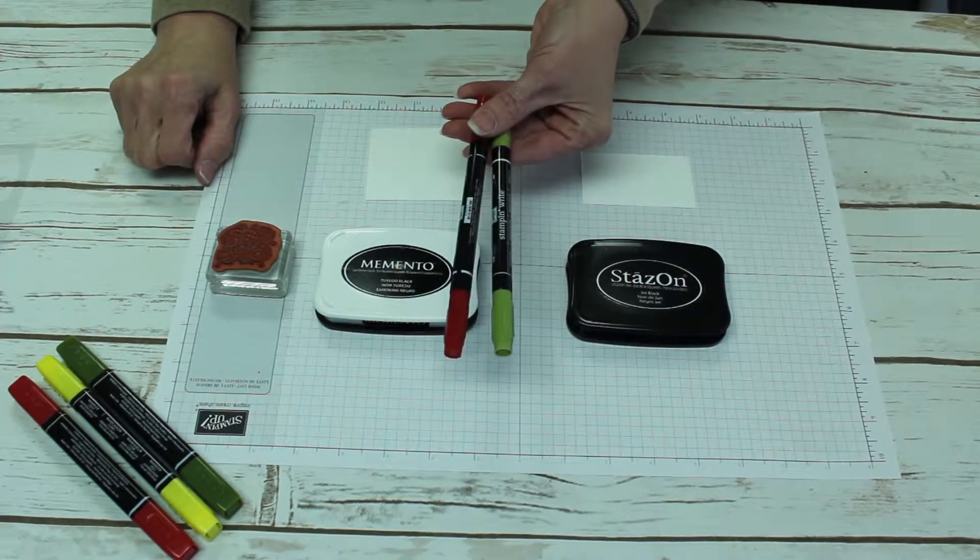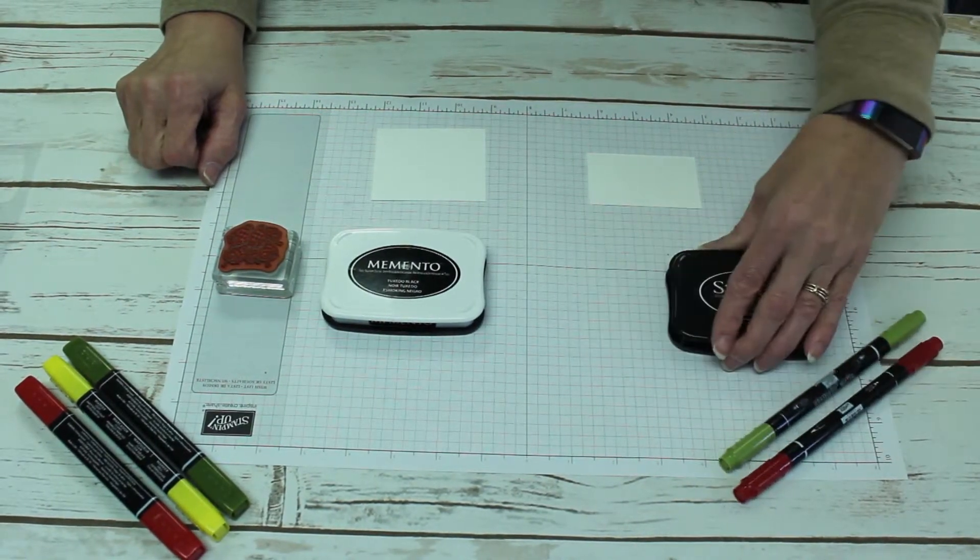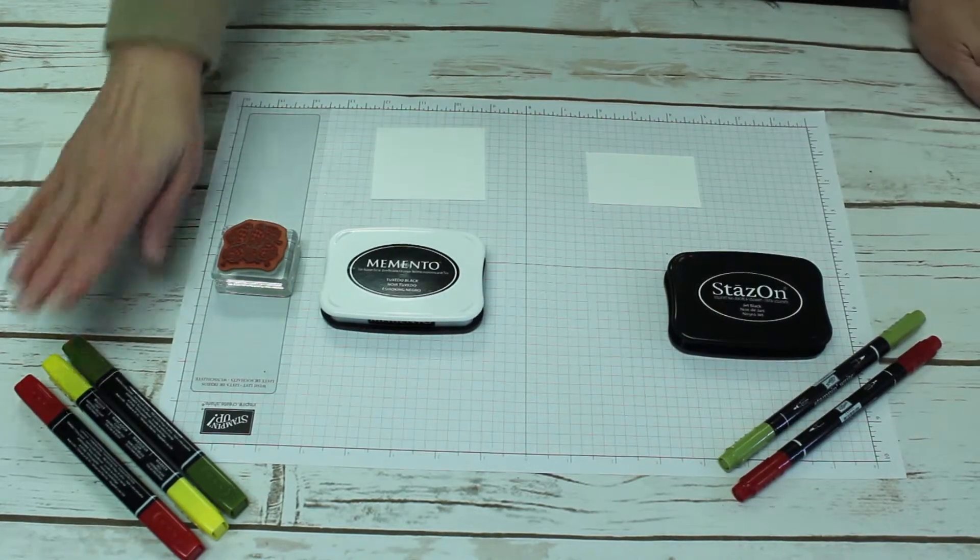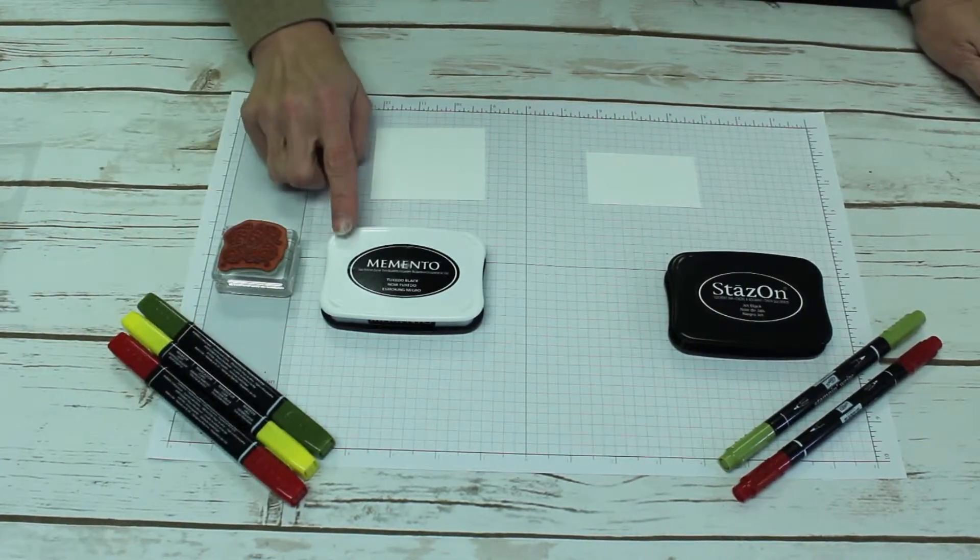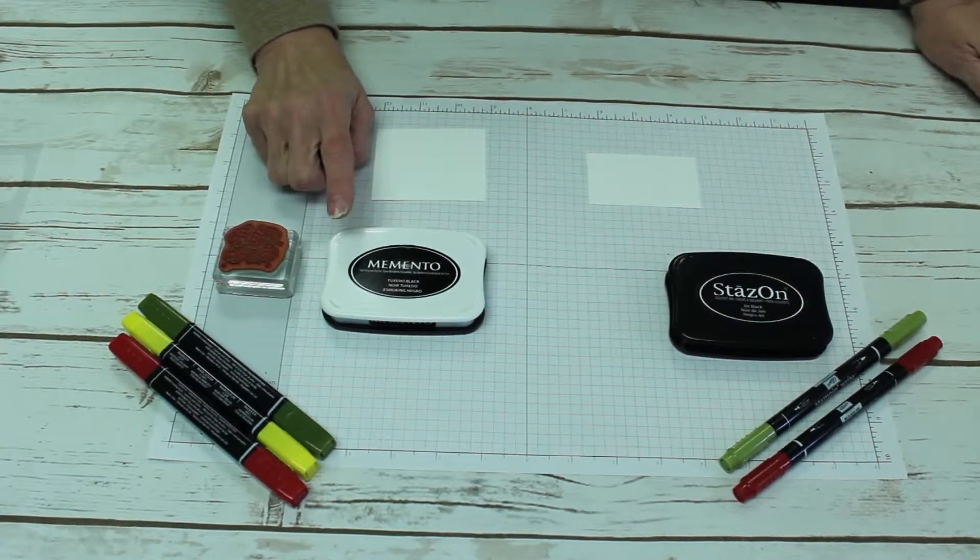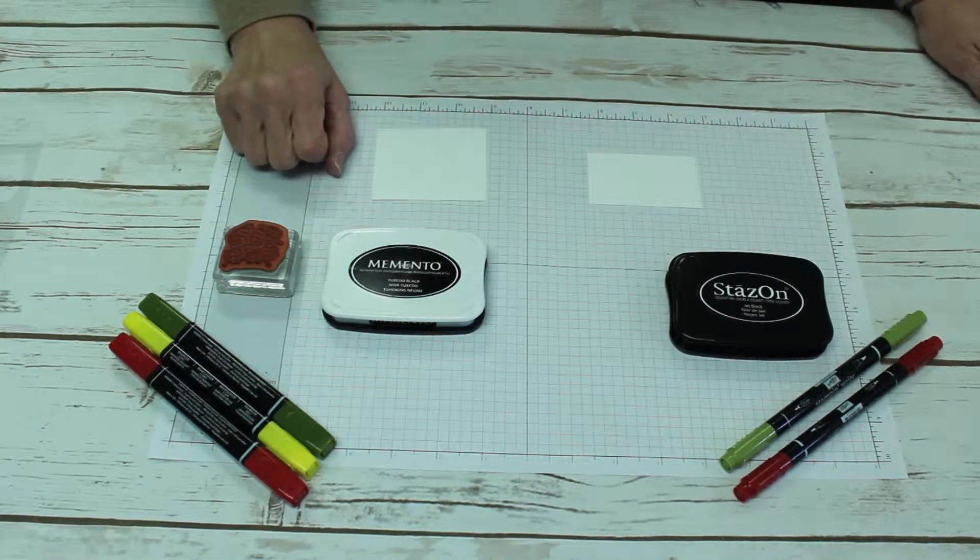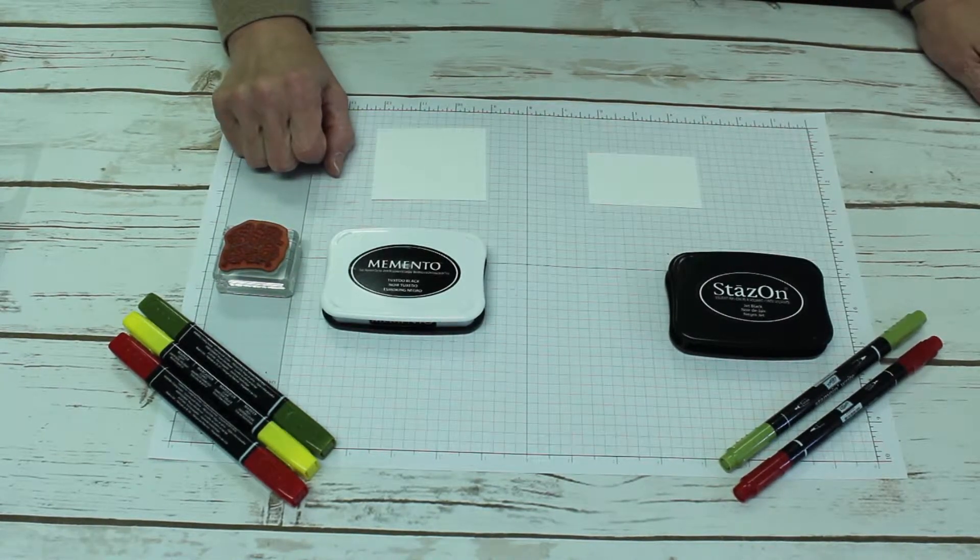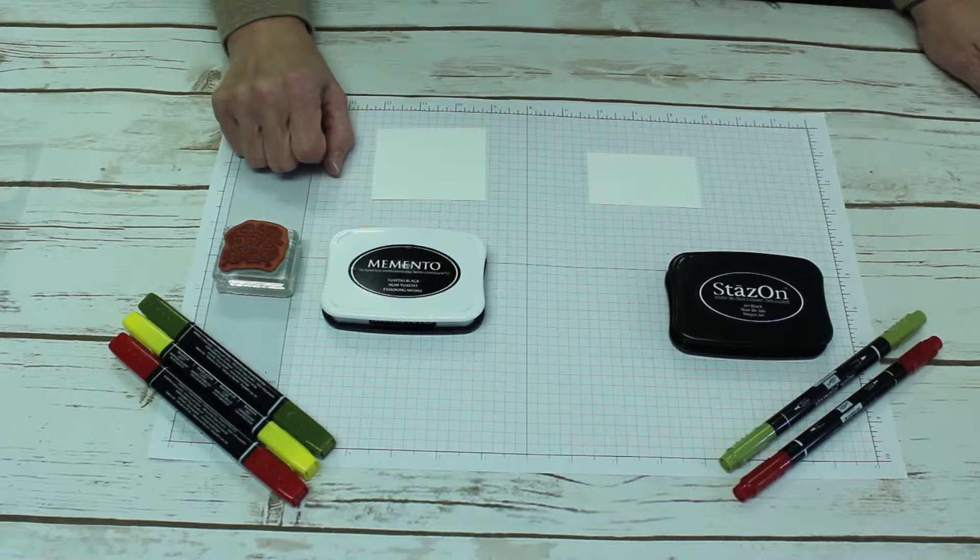When you're using the alcohol markers, you will want to use the Memento Tuxedo Black. After it dries it will not smear and smudge, and the alcohol will not bleed into it or cause the muddying.